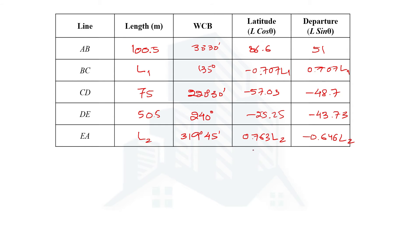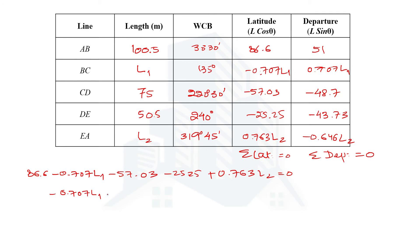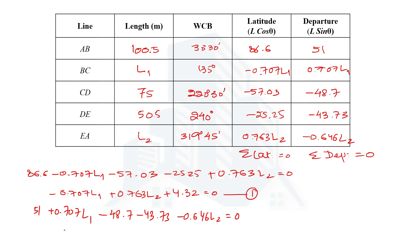Because this is a closed traverse, the summation of all latitudes equals zero and the summation of all departures equals zero. Adding all the latitudes and equating to zero gives a simplified equation — call this Equation 1. Similarly, adding all the departures and equating to zero and simplifying gives another equation — call this Equation 2.